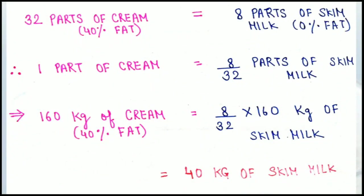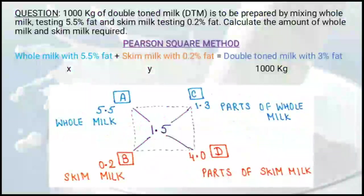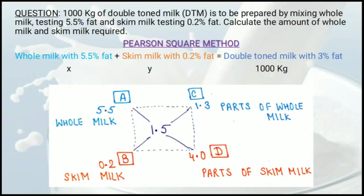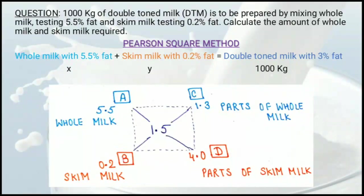Let's take another example to make the concepts clearer. We need to make 1000 kg of double toned milk by mixing whole milk with 5.5% fat and skim milk with 0.2% fat. How much of each must be mixed to get 1000 kg of double toned milk?